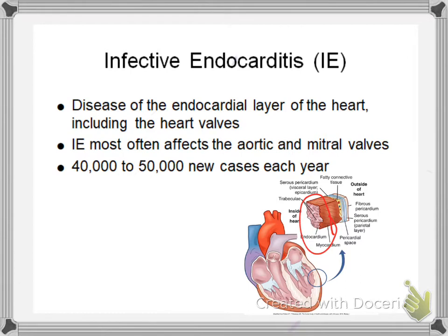Assessment-wise, you might see new or worsening systolic murmurs in patients. Patients may also present with heart failure, or they may have manifestations secondary to septic embolisms, so you might see clots in the central nervous system, extremities, spleen, or kidneys.